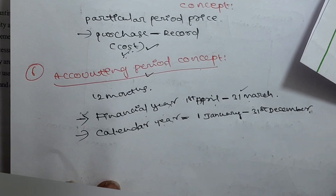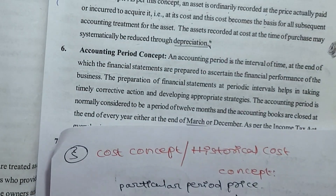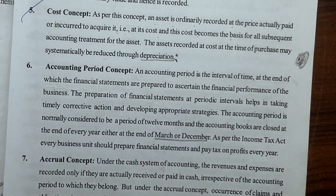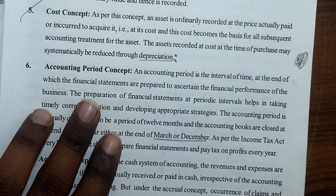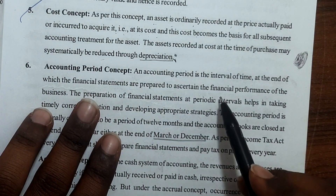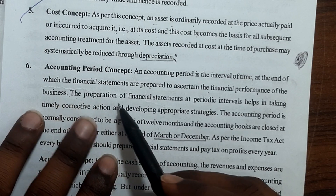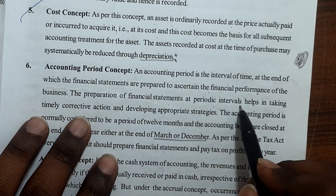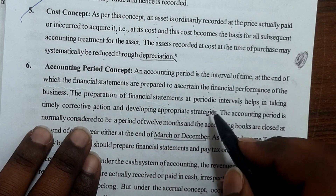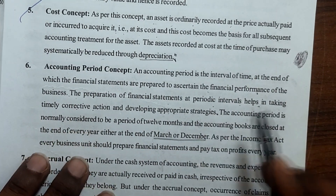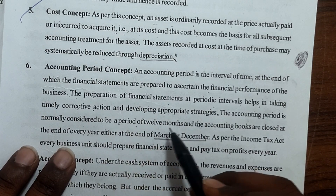The accounting period is the interval of time at the end of which the financial statements are prepared to ascertain the financial performance of the business. The preparation of financial statements at periodic intervals helps in taking timely corrective action and developing appropriate strategies. The accounting period is normally considered to be a period of 12 months.